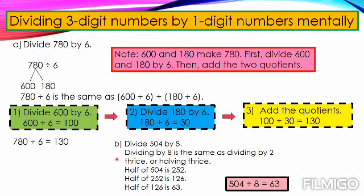Dividing by 8 is the same as dividing by 2 thrice, or halving thrice. Half of 504 is 252. Half of 252 is 126. Half of 126 is 63. So, 504 divided by 8 equals 63.